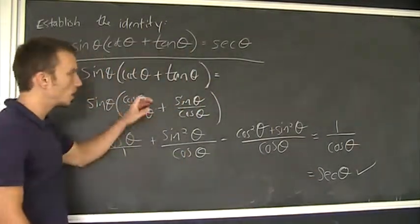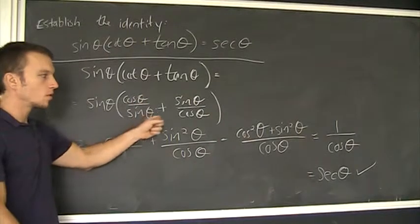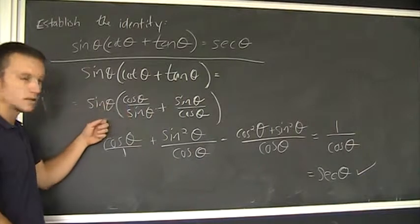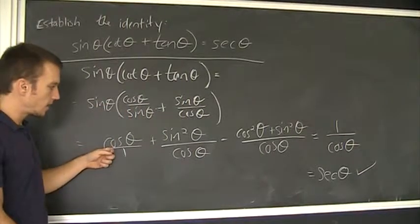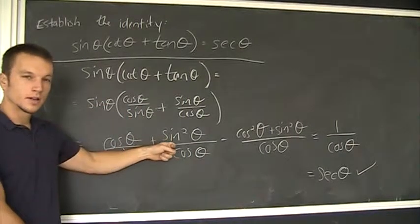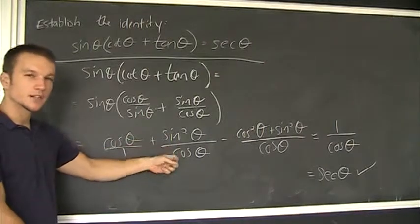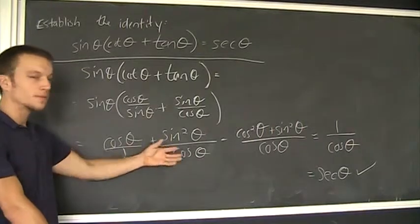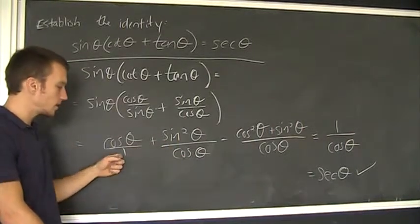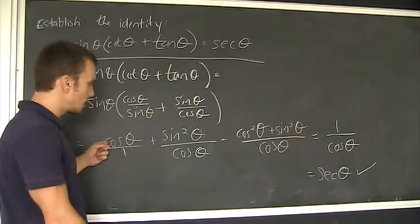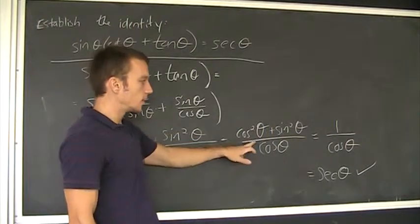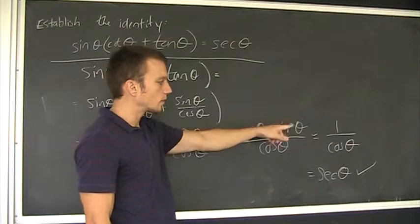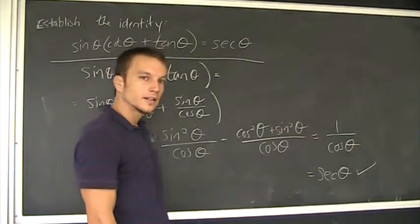How did I get there? Let's review. First, I used the quotient identity. Next step, I distributed the sine, which I knew I'd have to do at some point. Then I had cosine theta plus that fraction. What to do with that? Just add them together — you do that a lot. I needed a common denominator of cosine theta, that became cosine squared, and then the Pythagorean identity jumps out — that's equal to one. One over cosine theta is secant theta, and I'm done.